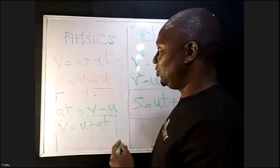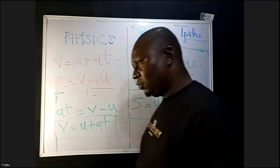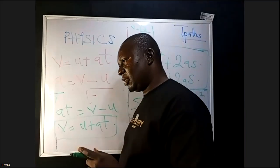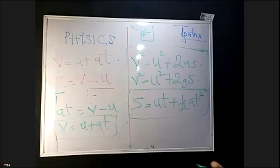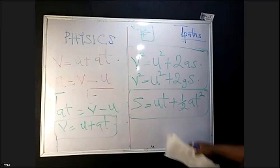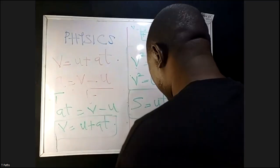The first one is V = U + AT. The second is V² = U² + 2AS. And the third is S = UT + ½AT². Very, very important.